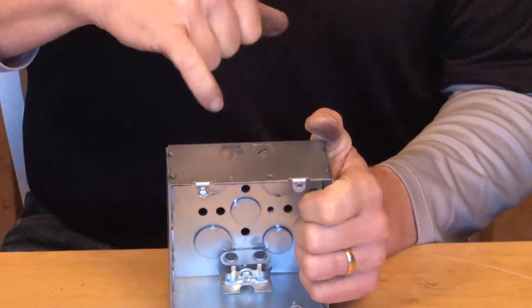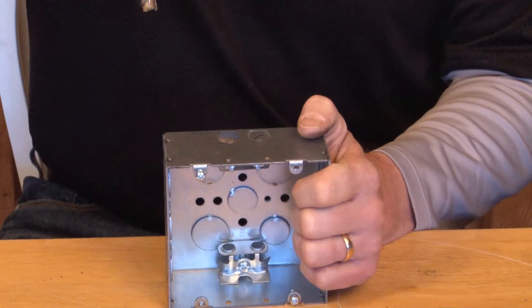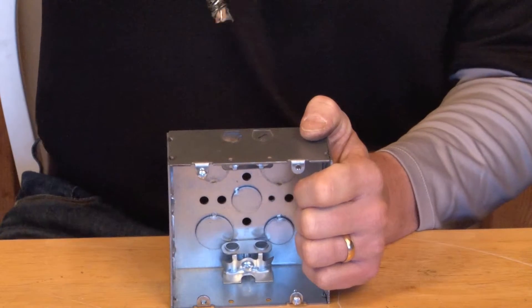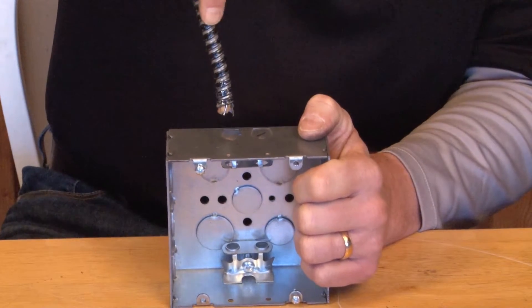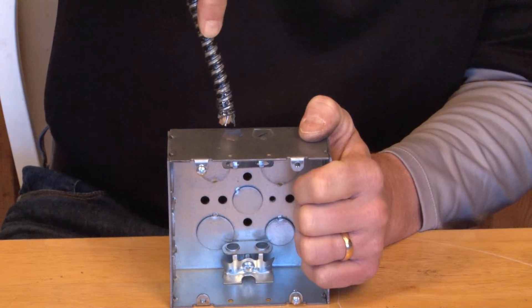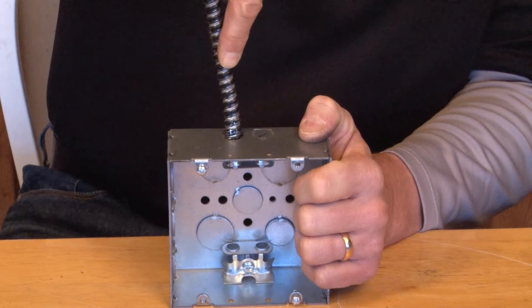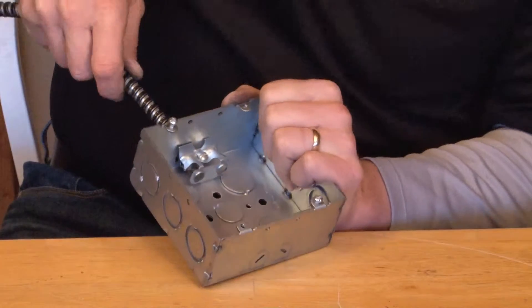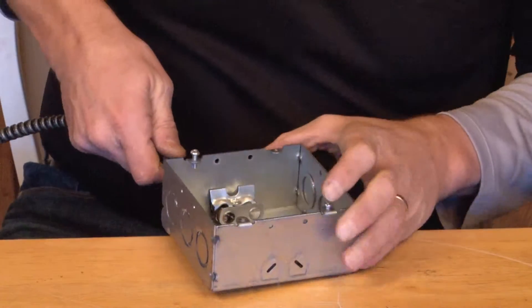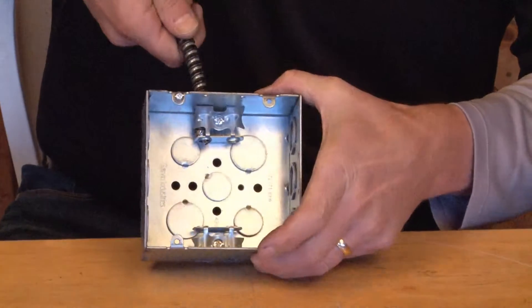We've configured the hole to fit three-eighths flexible metal conduit. At this point, all the installer needs to do is strip back the wires, install the flexible metal conduit inside the clamp, and the wires come through the box.